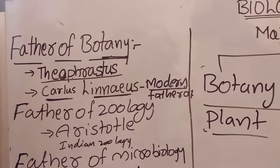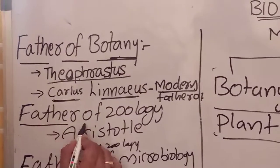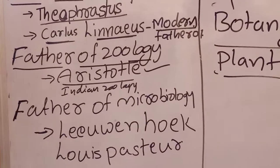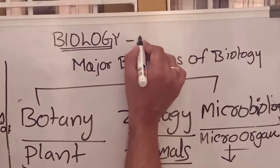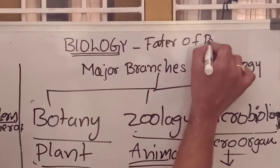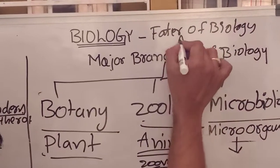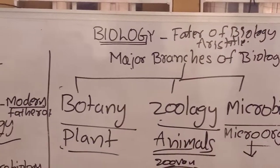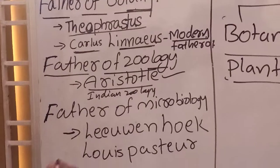The modern father of Botany is Carolus Linnaeus. After that, the father of Zoology — there is only one. That is Aristotle. Aristotle is also the father of Biology. Aristotle is the father of Zoology also — both modern and old. Father of Zoology: Aristotle.